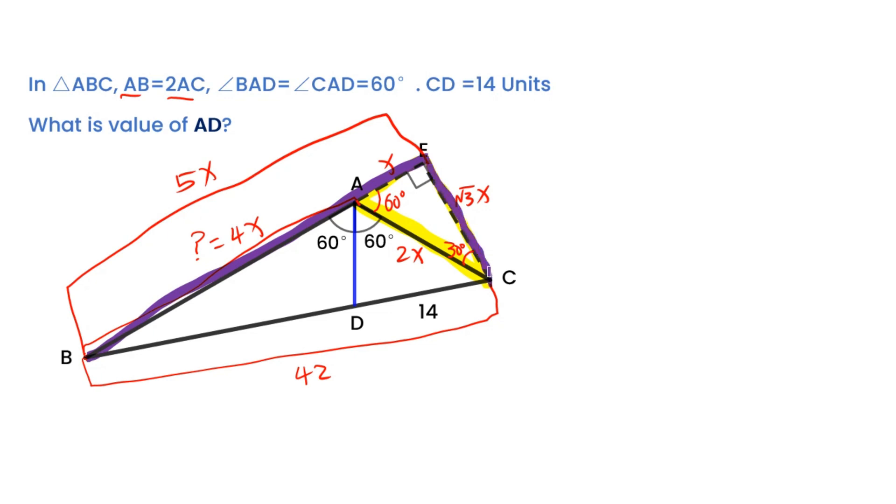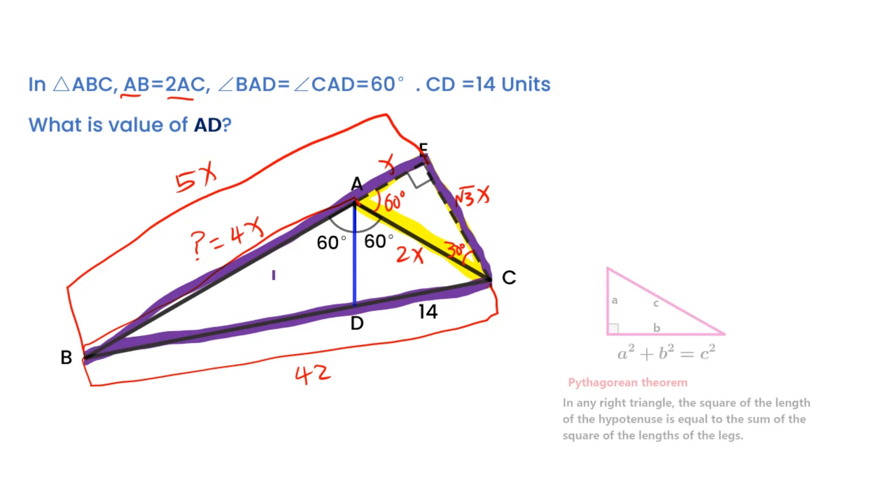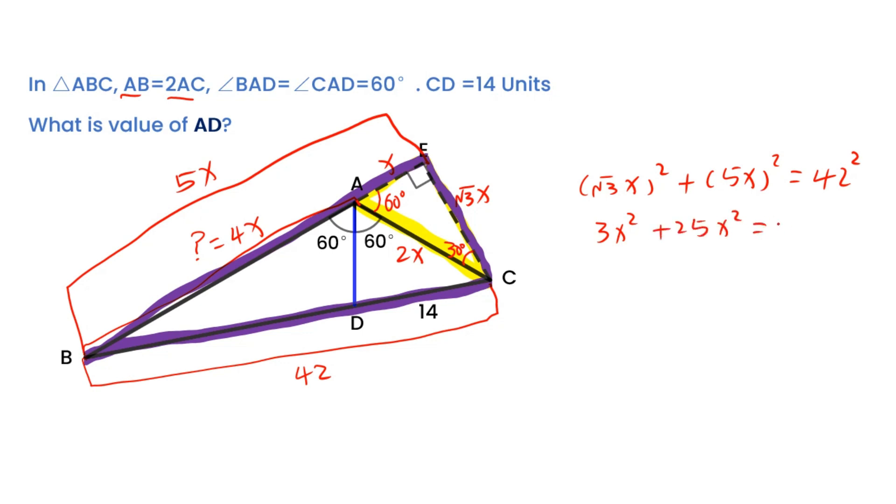Then let's focus on triangle BEC, is a right triangle. From the Pythagorean theorem, we get equation for X. We can calculate value of X is 3 times square root of 6.